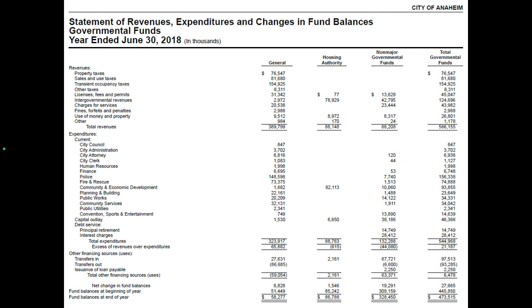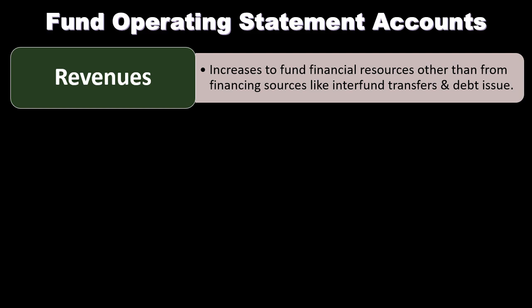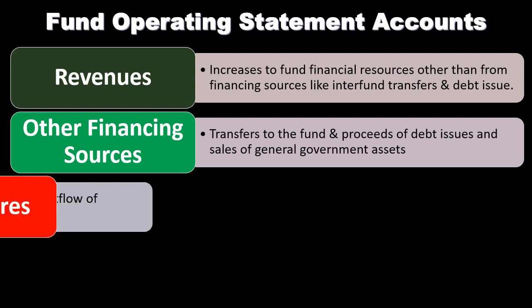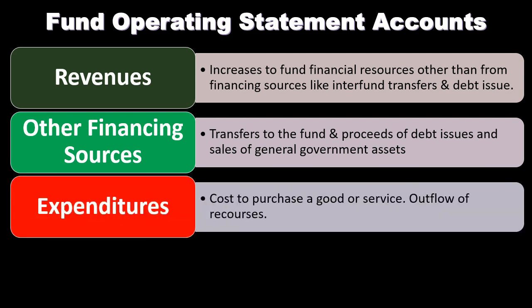Here we have a statement of revenues, expenditures, and changes in fund balances for the City of Anaheim. Revenues are listed at the top, then expenditures — note we have expenditures rather than expenses because we're on the modified accrual basis. Seeing 'expenditures' rather than 'expenses' signals the modified accrual basis, focusing on more current flow rather than long-term activity. Then we have other financing sources and uses, including transfers in, transfers out, and issuance of loan payable.